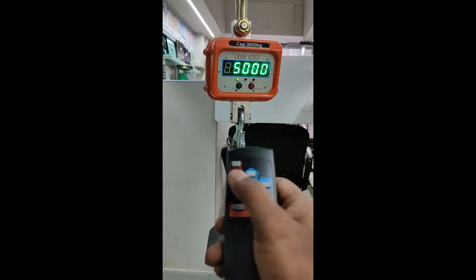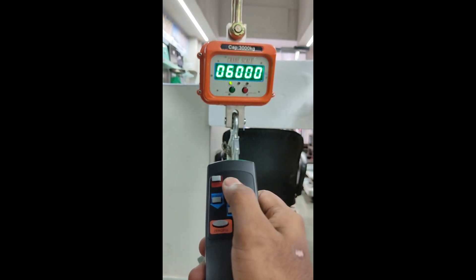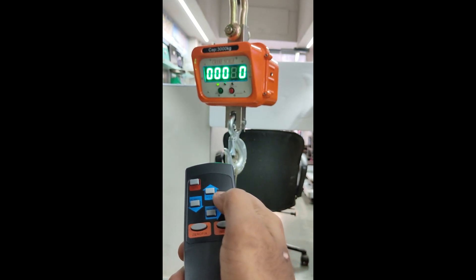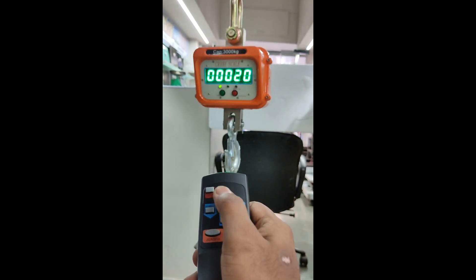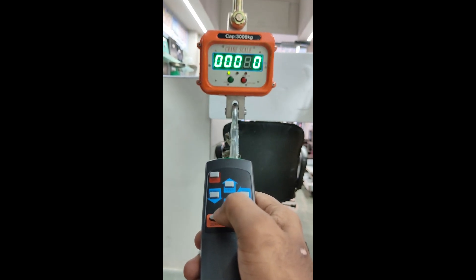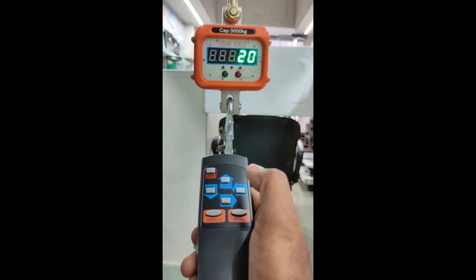Use these four buttons to adjust the value. I am entering 20 kg. After entering the load value, press the zero button and your calibration is complete.